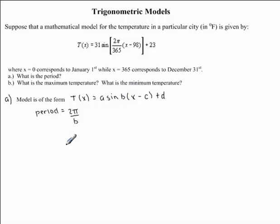So, our period is actually equal to 2π divided by, instead of writing b, I'm going to write the value that's found in our trigonometric model that represents b. I'm going to put it in brackets: 2π over 365.